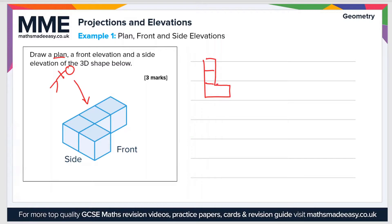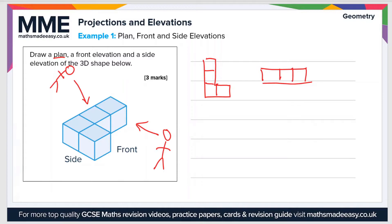Next, let's look at the front elevation. You'd be stood looking in this direction, and from this perspective you would see just a flat rectangle that is three squares wide. Let's label these — that's the plan and that's the front.